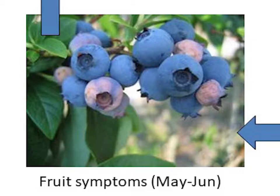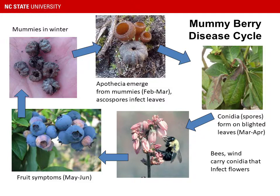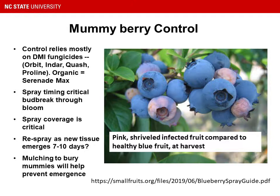Mummyberry control relies mostly on demethylation inhibitor fungicides — the DMIs. Some trade names are Orbit, Endura, Quash, and Proline. This whole class has really good activity against this pathogen. Organic growers can use Serenade Max; it's not as effective as the DMIs but will provide some suppression of disease. Spray timing is really critical from bud break through bloom. Mummyberry sprays are applied when leaf shoots emerge to protect the shoots against the primary stage of the disease, and also through bloom to protect the flowers from the secondary or fruit infection stage. Spray coverage is really critical; if you're trying to cover the leaf shoots, you may have to respray fairly often.